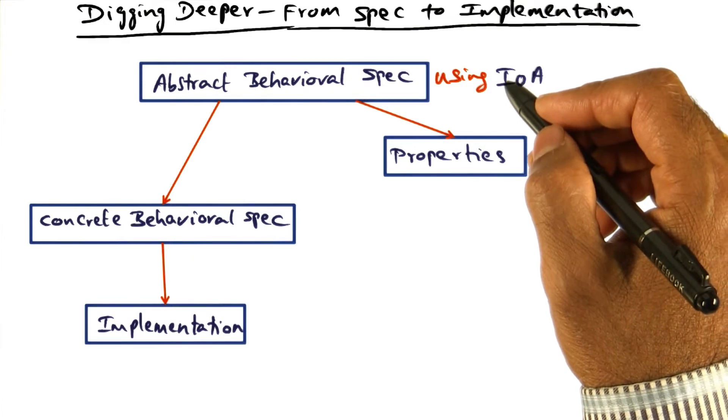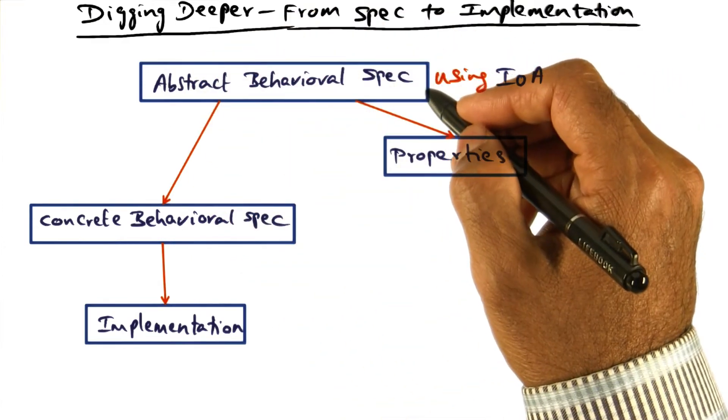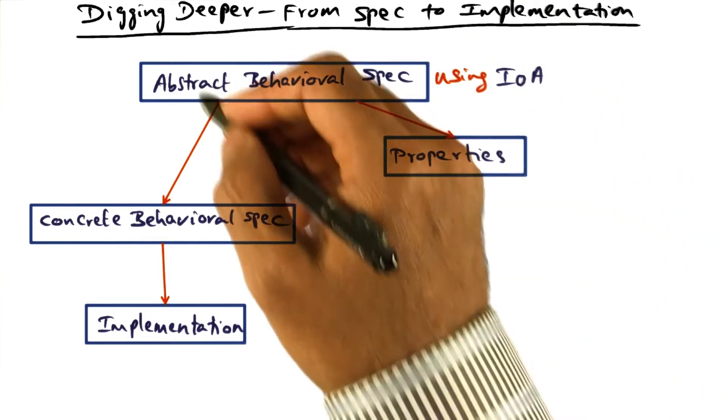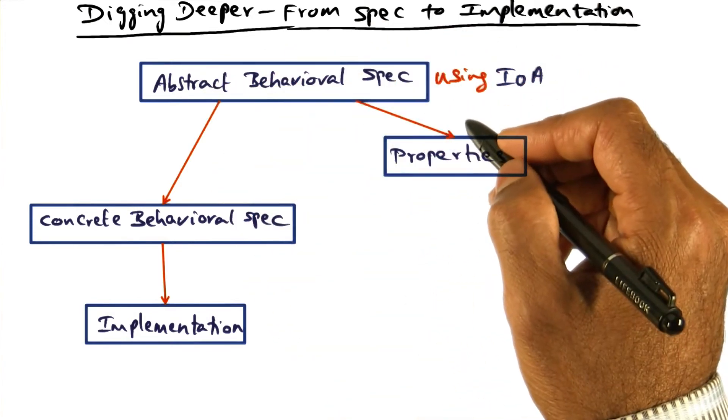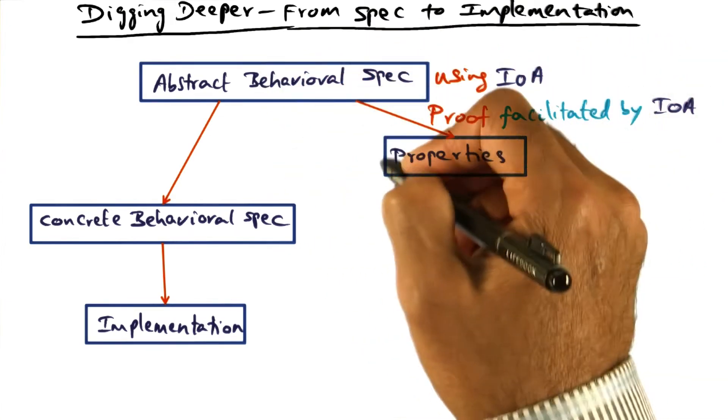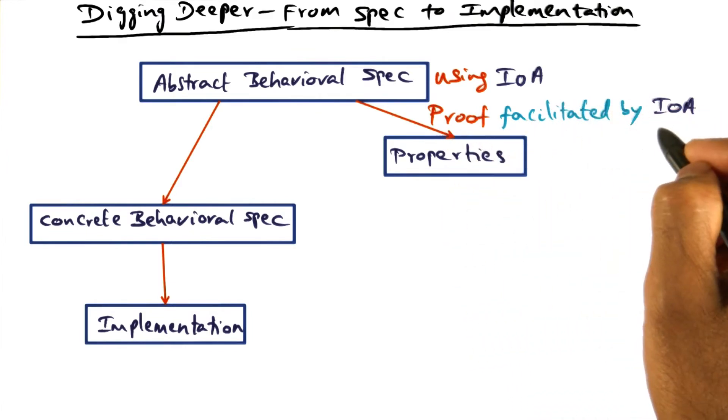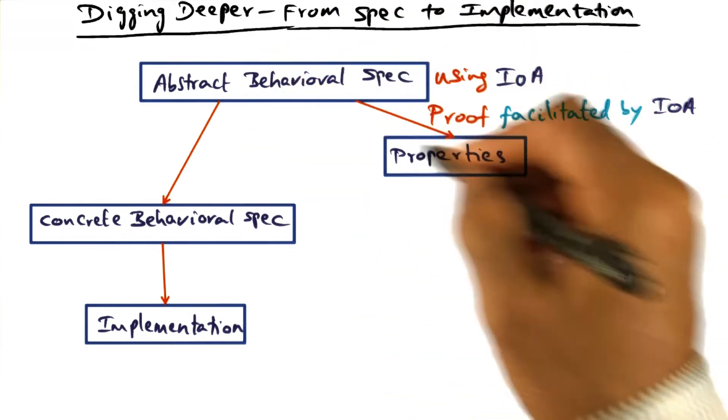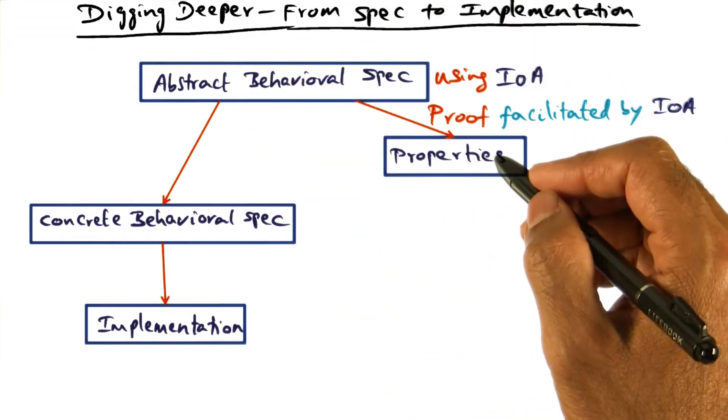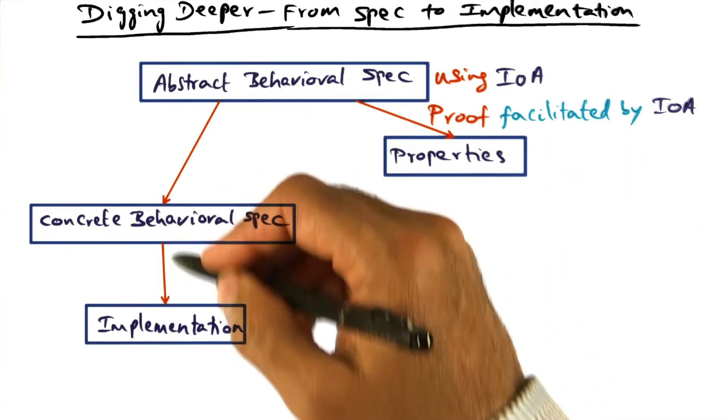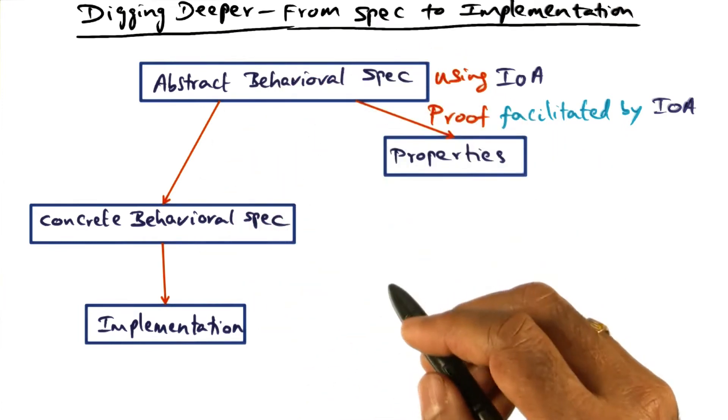Once you express the abstract behavioral properties, you can actually verify whether the behavioral specification meets the properties that you want in the subsystem. Proving that the behavioral spec meets the properties is facilitated by the IO automata theoretical framework. Once we know that the behavioral spec is meeting the properties we set out for the subsystem, then we are ready to implement the behavioral properties.